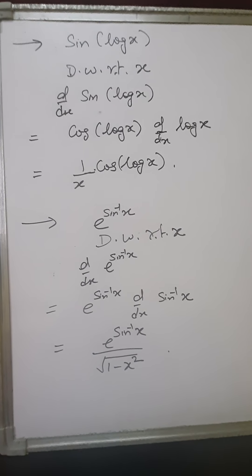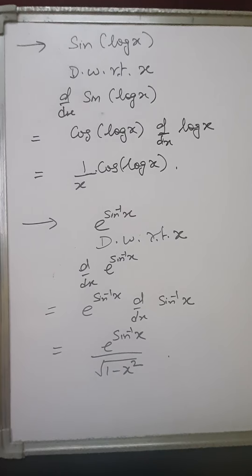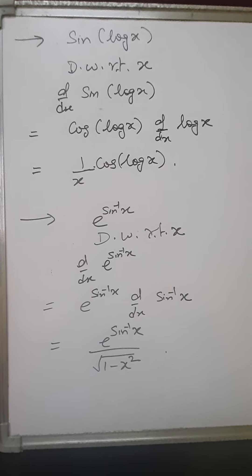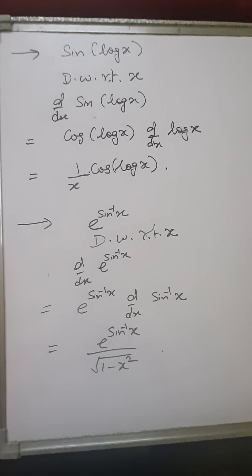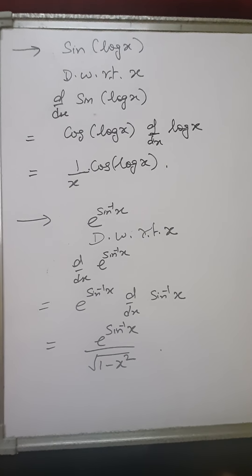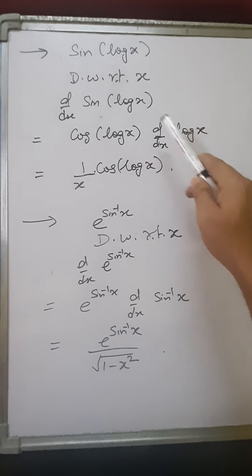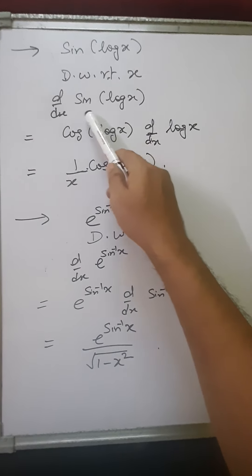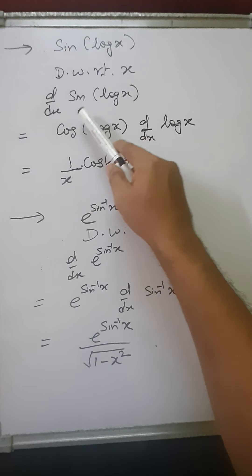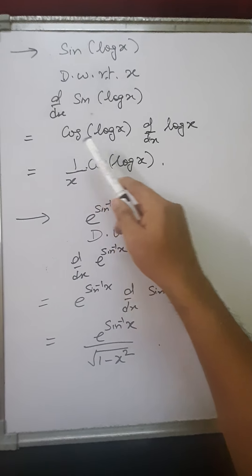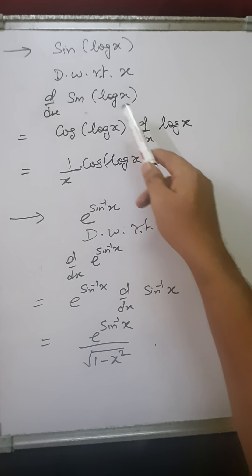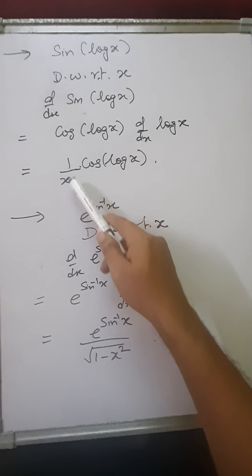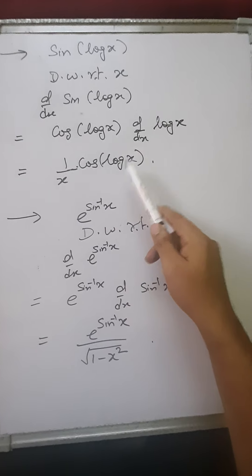Let's discuss some examples to understand the topic more clearly. Suppose the function is sin(log x) and we have to find its derivative. So differentiating with respect to x: d by dx of sin(log x). We apply the chain rule, considering log x as the inner function. Since d by dx of sin x is cos x, it becomes cos(log x). Then we differentiate log x, and since d by dx of log x is 1 upon x, the answer is cos(log x) upon x.